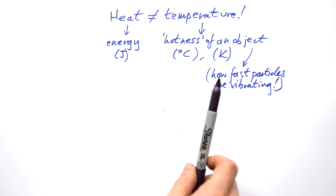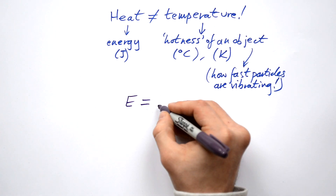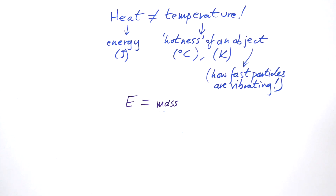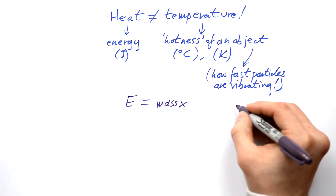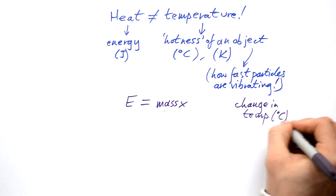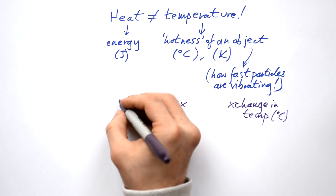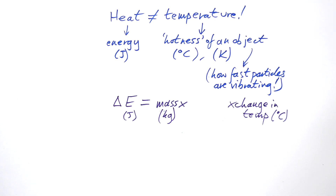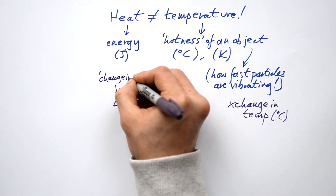Is there a way to tell how much the temperature of something goes up by if we put so much heat in? Yes there is. We can say that energy equals mass — because of course the bigger something is the more that energy is going to spread out — times the change in temperature, measured in degrees Celsius, with kilograms as the unit for mass. Delta means change in energy or change in anything, so we have a change in energy causing a change in temperature.